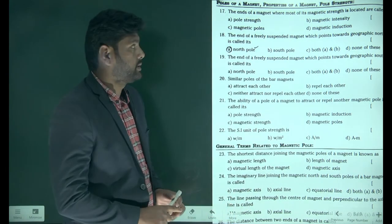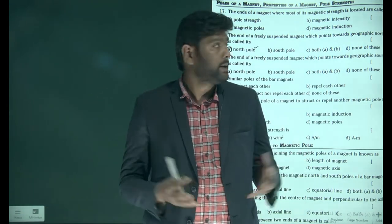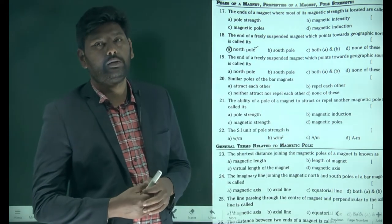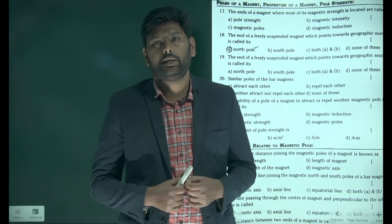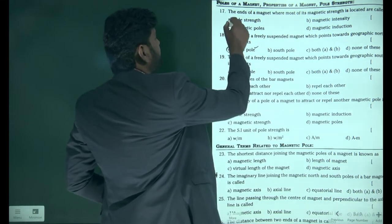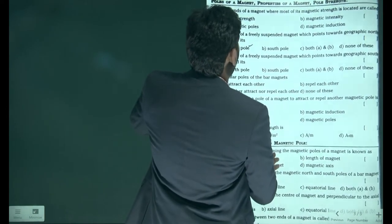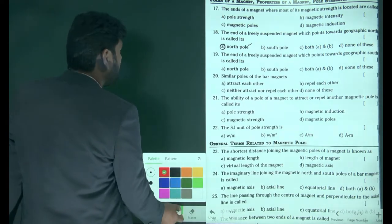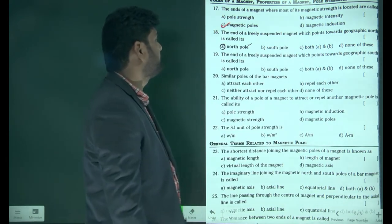The next question: the strength of the total magnetic material will be at the poles. The poles are located slightly inside the bar magnet — inside the edge of the bar magnet. Our answer is magnetic poles. It is not pole strength — it is magnetic poles.